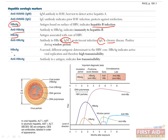Hepatitis B E antigen is another antigen found in the core of the hepatitis B virus. It correlates with how infective a person is — if the patient has this antigen in their system, the virus is highly transmissible to others. The presence of antibodies against hepatitis B E antigen indicates low transmissibility.